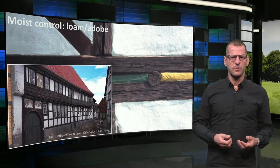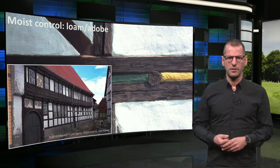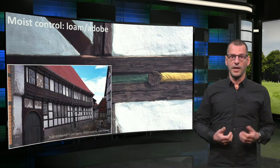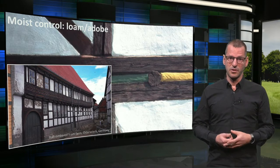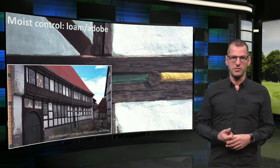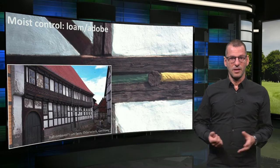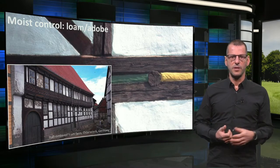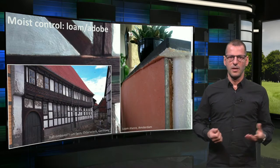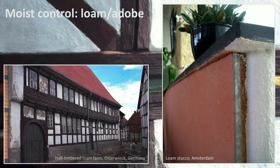A different challenge with water is moisture in the form of humidity. Loam, or adobe, has been a building material for ages, used in typical wattle and daub or half-timbered buildings. Less known is that loam can regulate humidity. If a space has a high relative humidity, loam will absorb water vapor from the air. If the air is relatively dry, the material will release moisture to the air — of course within limits. This makes loam well suited for indoor stucco plasterwork.